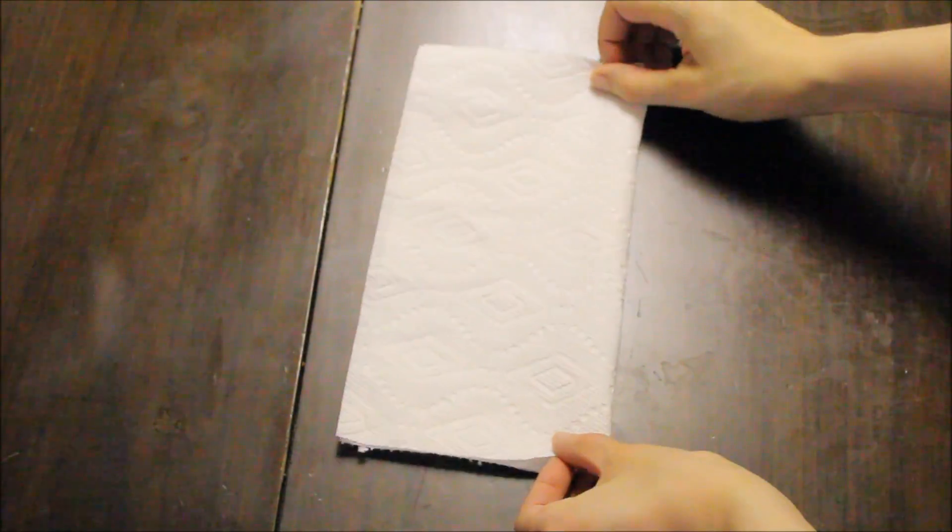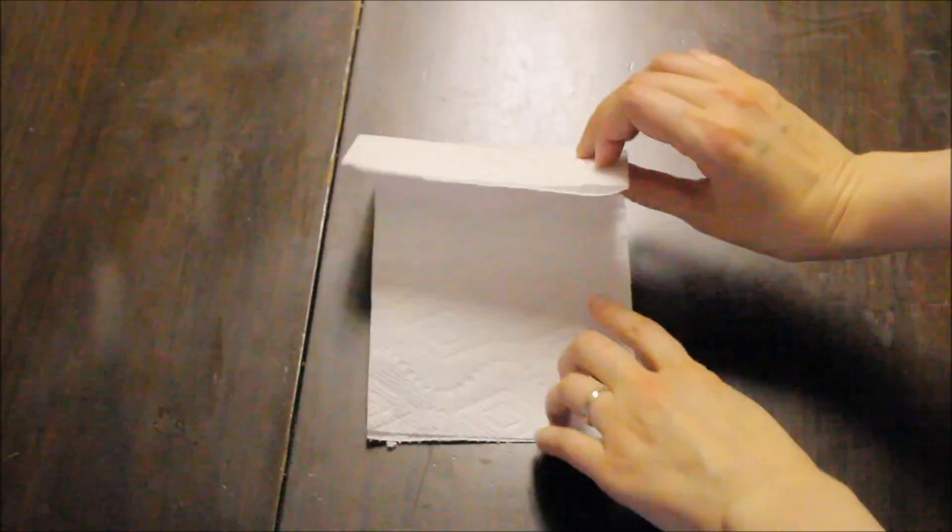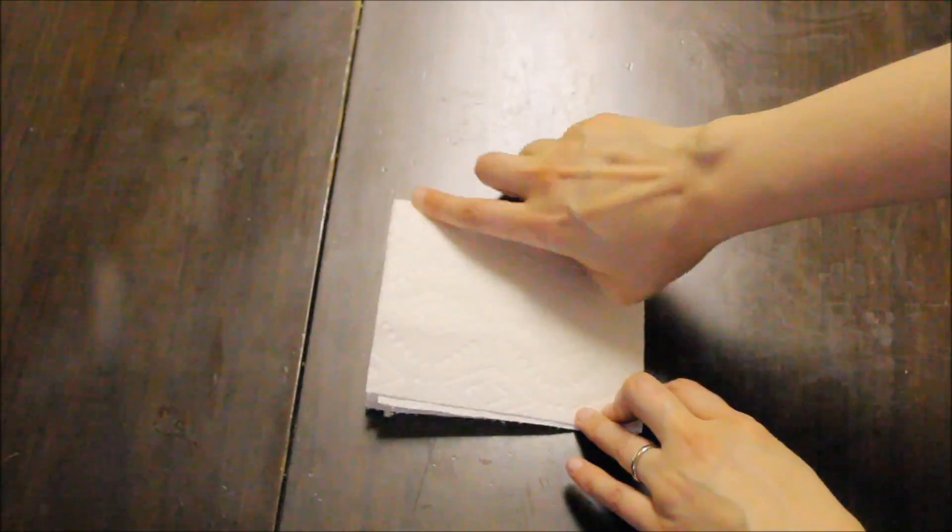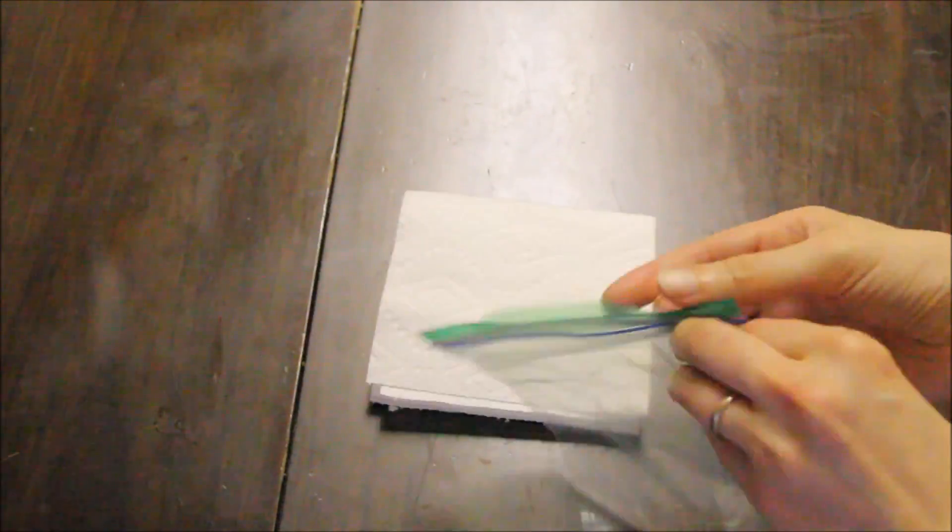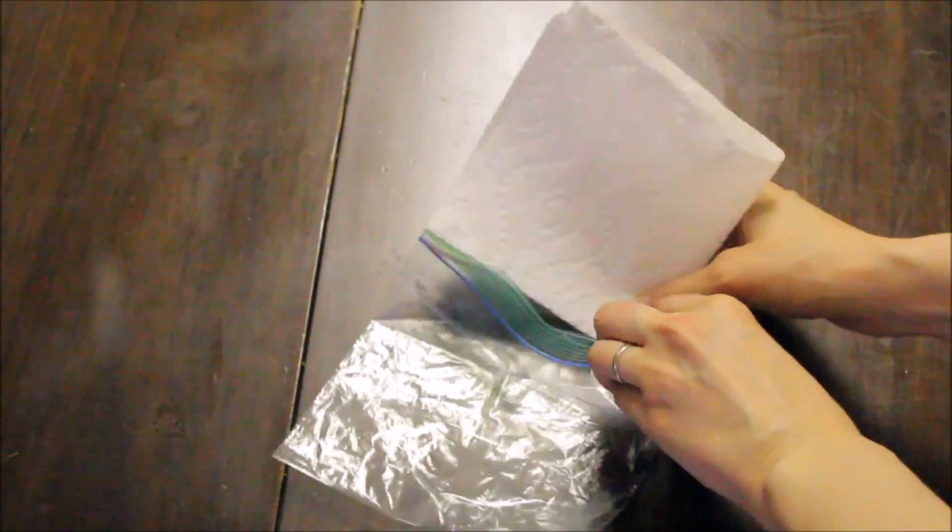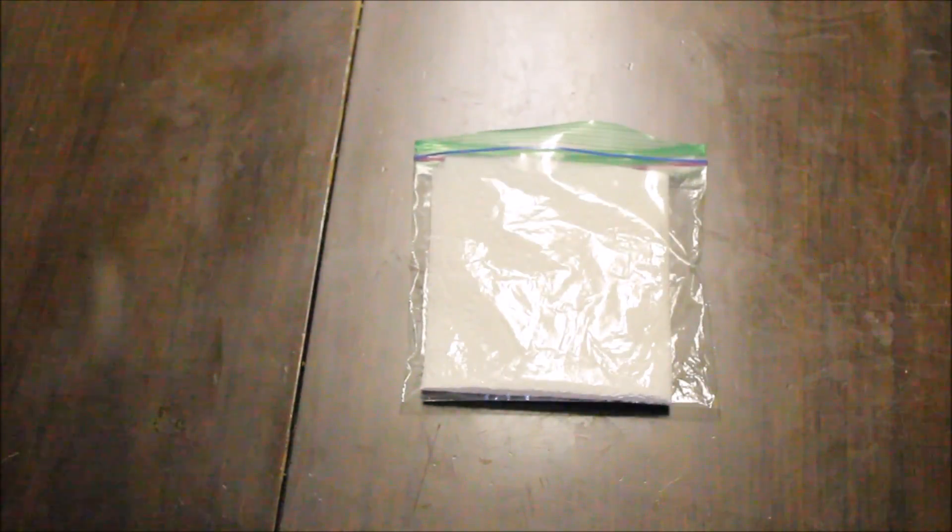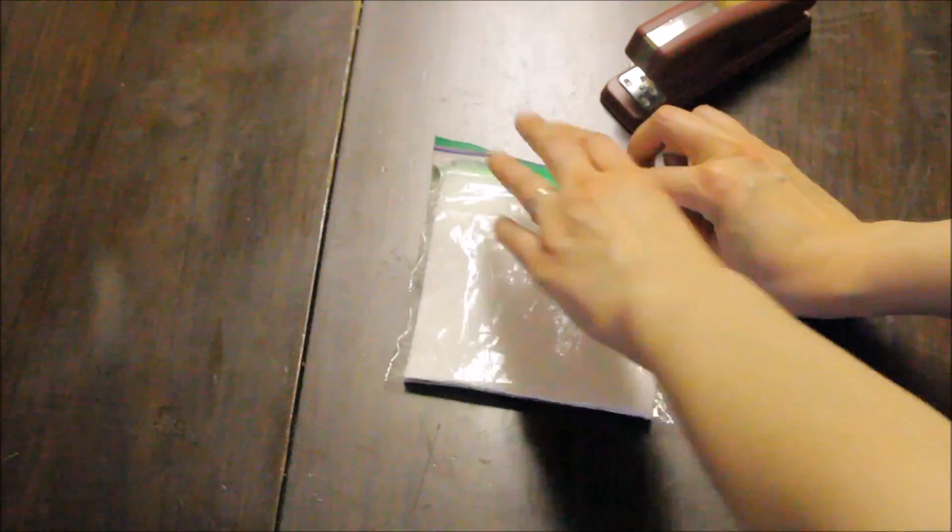Let's start with a paper towel and fold it in half. Let's fold it in half again. Now let's take the plastic bag and put the paper towel inside it and staple a row in the middle.